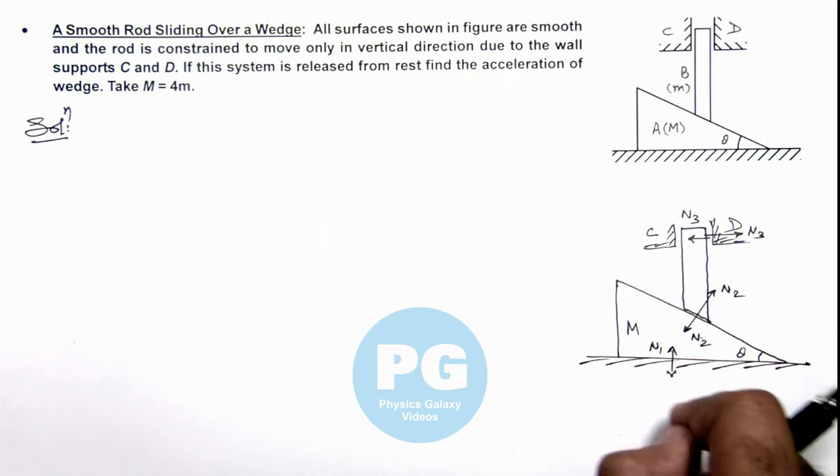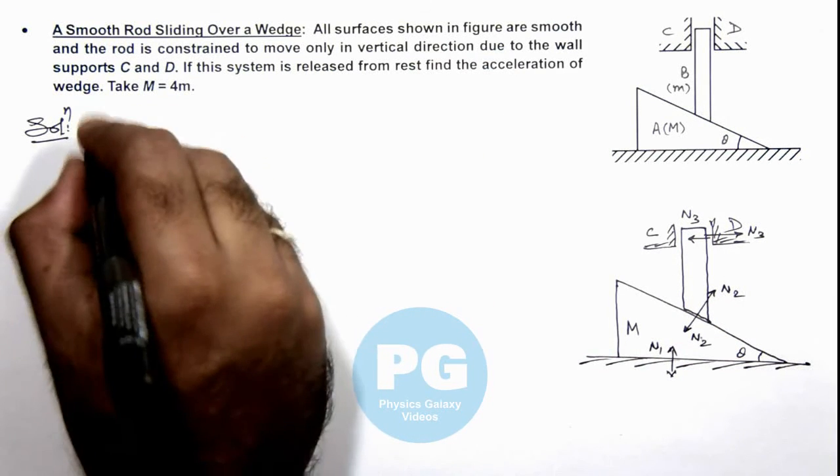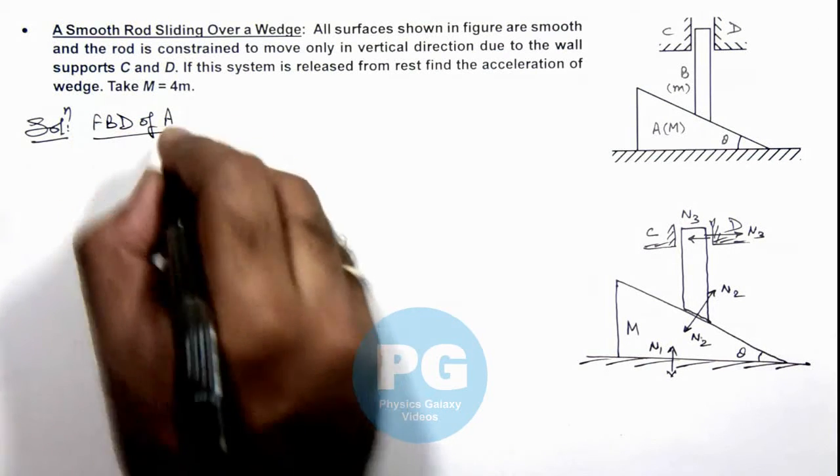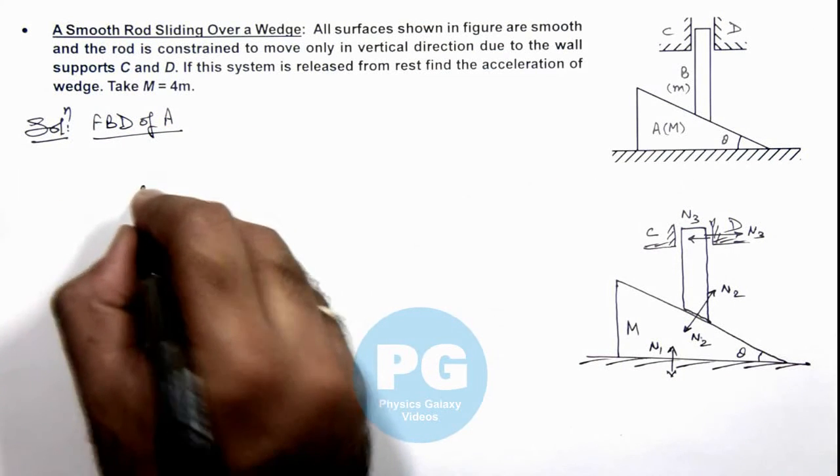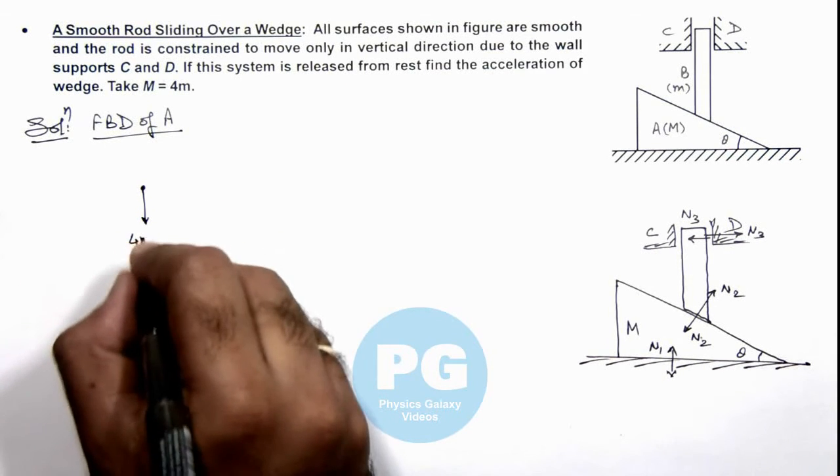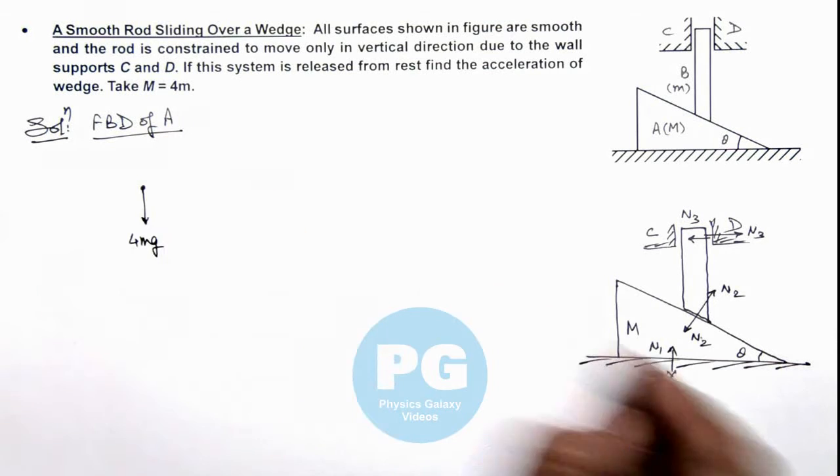Now in this situation if we draw the free body diagrams, first we draw that of wedge A. Then it'll experience the downward weight which is 4mg. Its mass is given as 4 times the mass of rod.